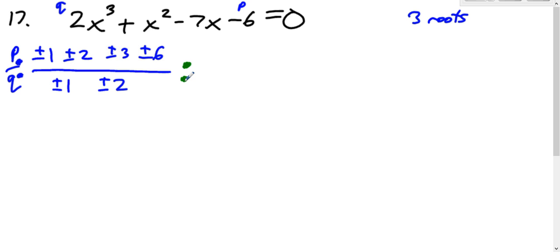And we need to look at all of those different combinations. So you can have one over one, which is one, so plus or minus one. You can have one over two, so plus or minus one half. You can have two over one, so plus or minus two. Or two over two, which is just one, we already wrote down a one. You can have three over one, so plus or minus three. Or three over two, plus or minus three over two. Six over one, plus or minus six. Or you can have six over two, which is three, we already wrote down three. So those are all of our possible rational roots.